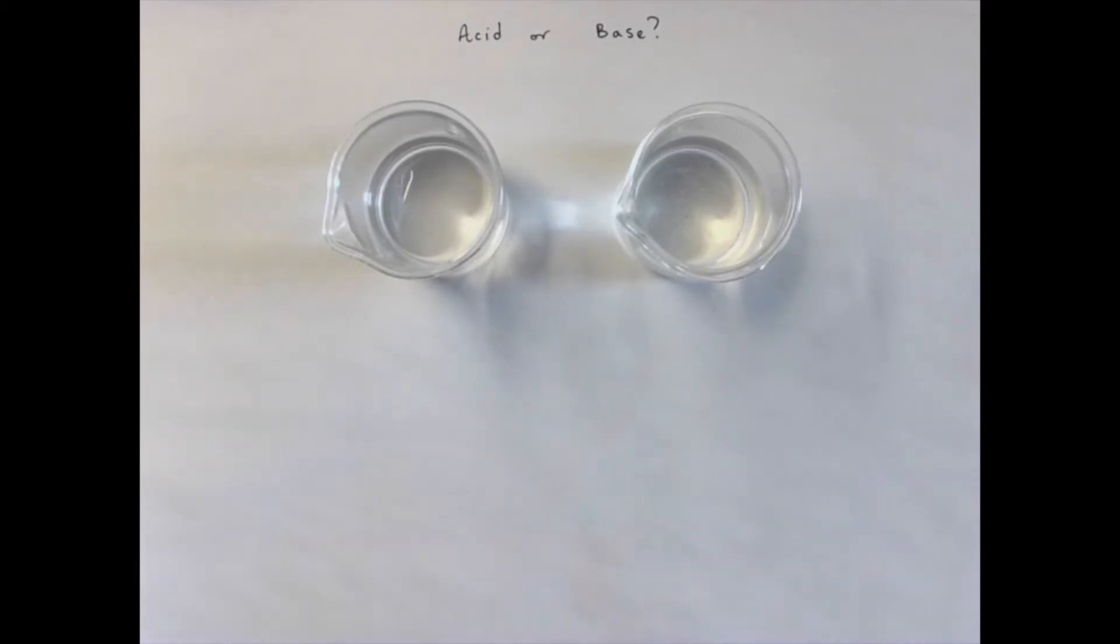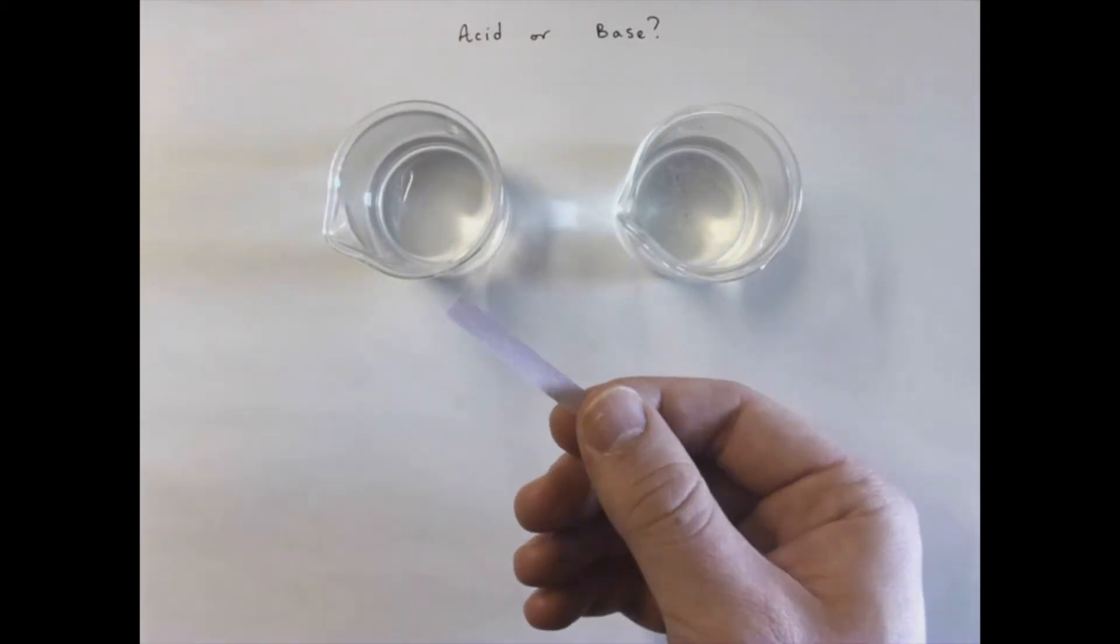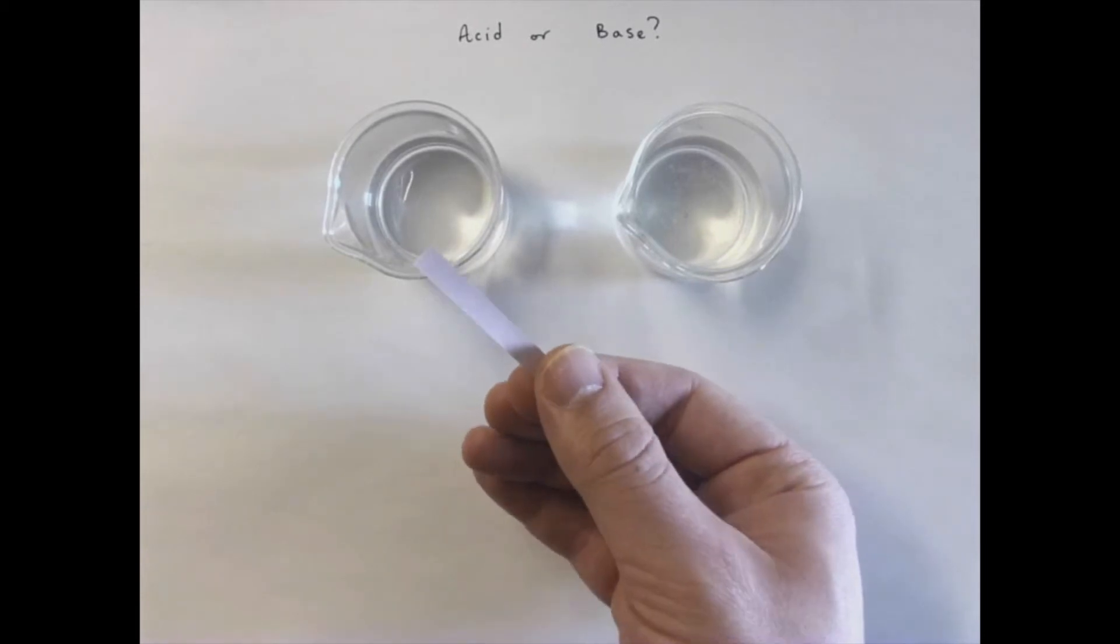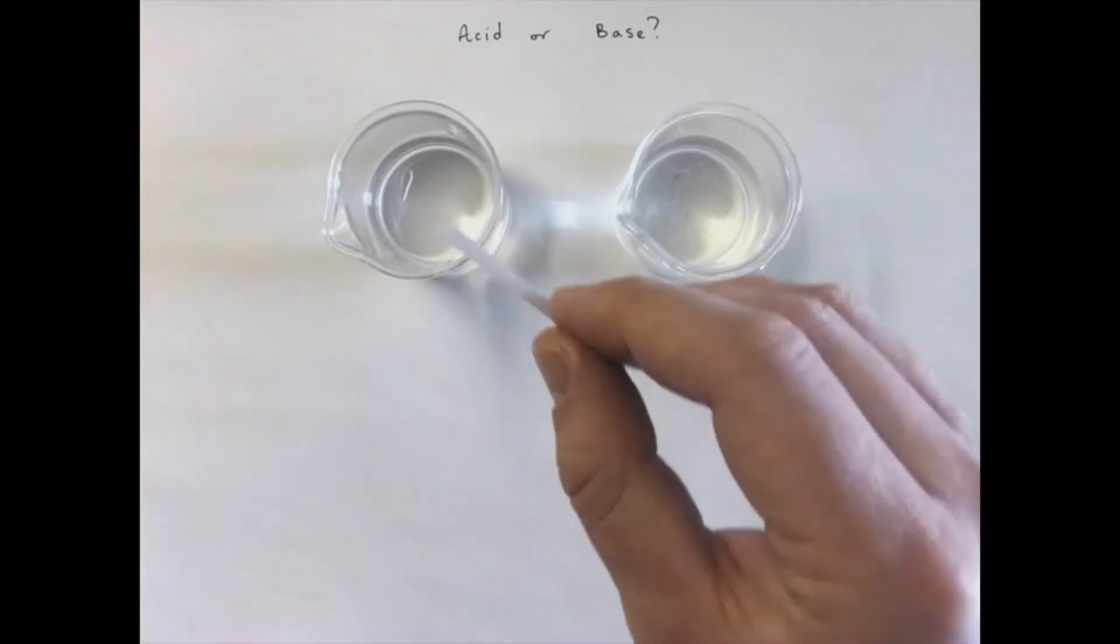All right, so let's start out by doing a few tests. Once again, some of these things will be familiar to you. So I'm going to start with some red litmus paper. I know it looks kind of lilac-y there, almost blue, but just trust me, this is red litmus paper.